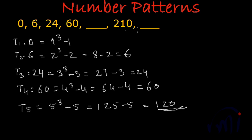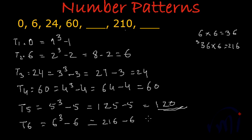T6 should equal 6³ - 6. The cube of 6: 6 times 6 is 36, and 36 times 6 is 216. So 216 minus 6 equals 210. Yes, we are getting 210, which confirms our pattern.